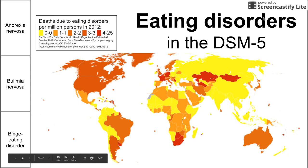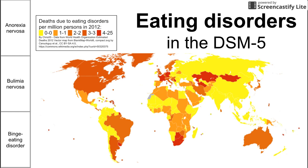This is a brief video on eating disorders in the DSM-5. We're going to be talking about anorexia nervosa, bulimia nervosa, and binge eating disorder. We're going to do a comparison of these three disorders on the last slide with a Venn diagram that helps you differentiate them, identify the unique points about each disorder, and identify which disorder is being described on an exam.